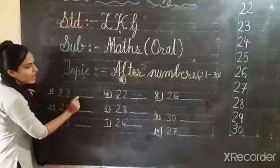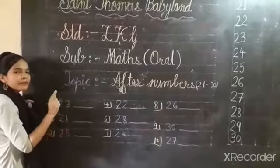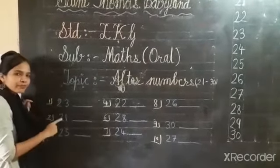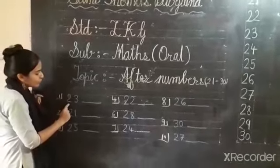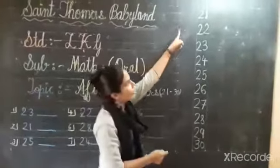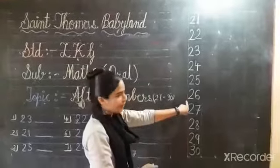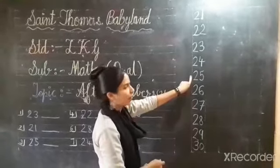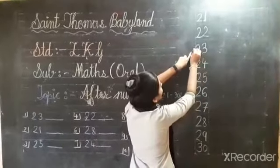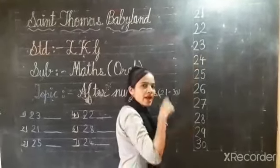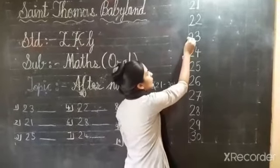We have to write here the after number. After number means down number. So what is this? This is 2, 3 — 23. Down. After 23, what will come?